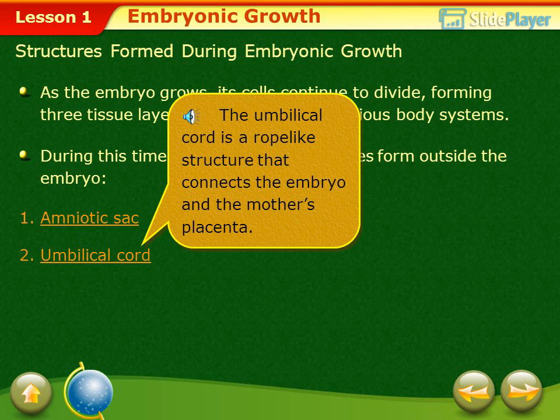Two important structures form outside the embryo: the amniotic sac, a thin fluid-filled membrane that surrounds and protects the developing embryo, and the umbilical cord, a rope-like structure that connects the embryo to the mother's placenta.